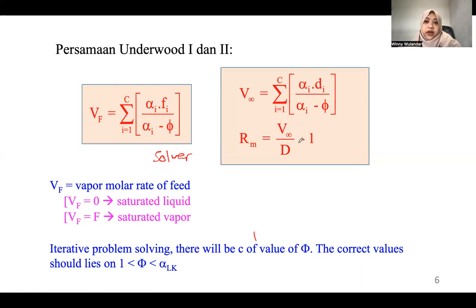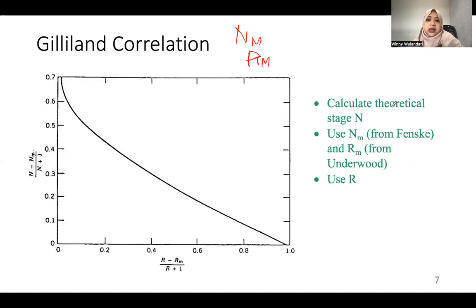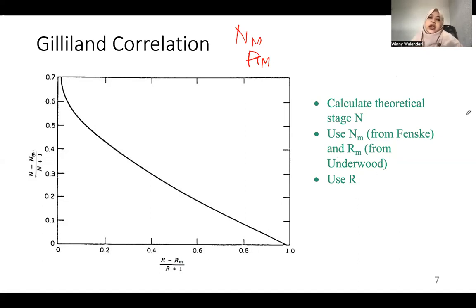Once you have N_m from Fenske and R_m from Underwood, you use the Gilliland correlation. The vertical axis is (N − N_m)/(N + 1) and the horizontal axis is (R − R_m)/(R + 1). You define your operating reflux ratio R — typically about 1.35 × R_m — and then use N_m and R_m to read off the actual number of equilibrium stages N for your multi-component distillation.